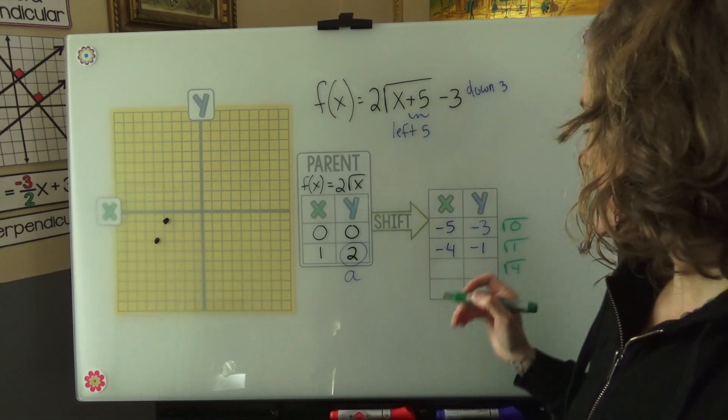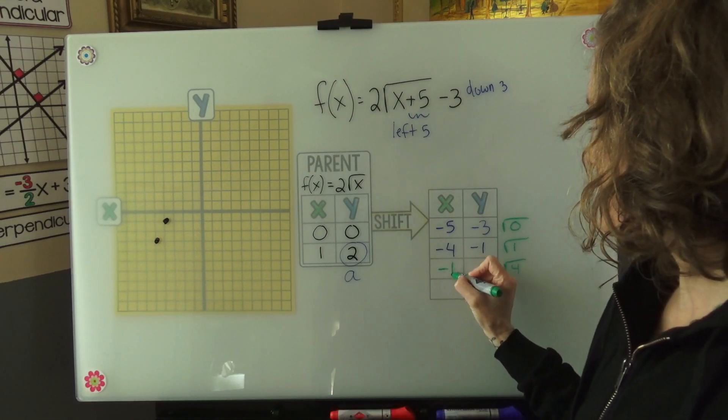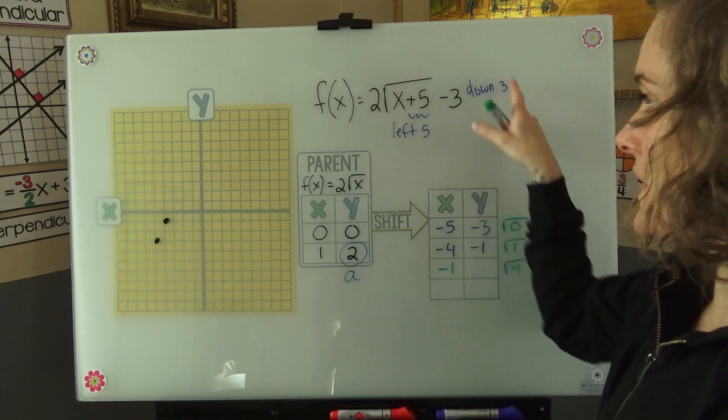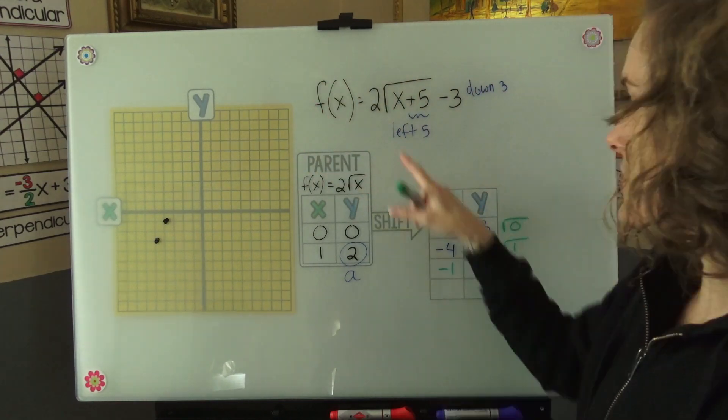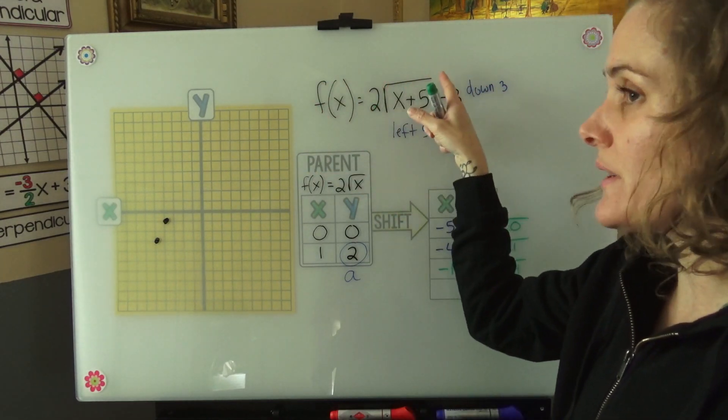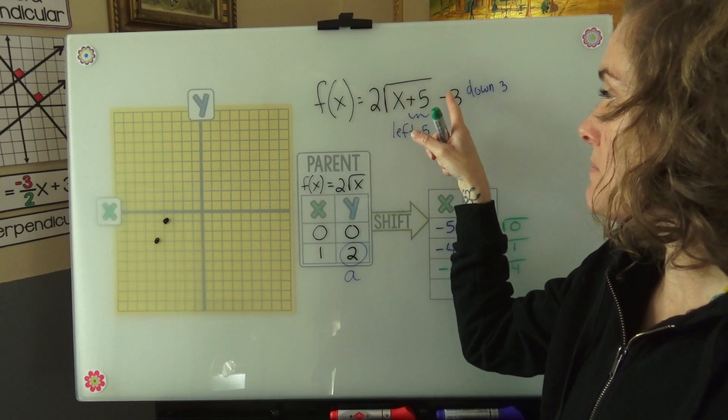What would we need to plug into x in order to get a 4 out of here? Well, negative 1. So let's plug in a negative 1. And we're just going to plug it in right to our original function. Negative 1 plus 5 is 4. Square root of 4 is 2. 2 times 2 is 4. Minus 3 is 1.